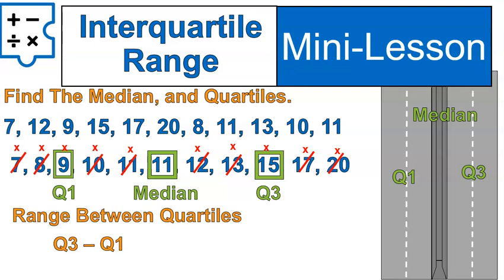So in this case, the range between the quartiles is 15 minus 9. Quartile 3 minus quartile 1, and that gives us 6. 6 is our interquartile range. Pretty straightforward.